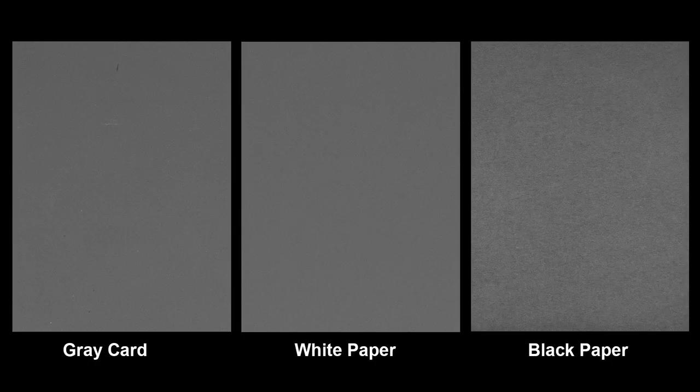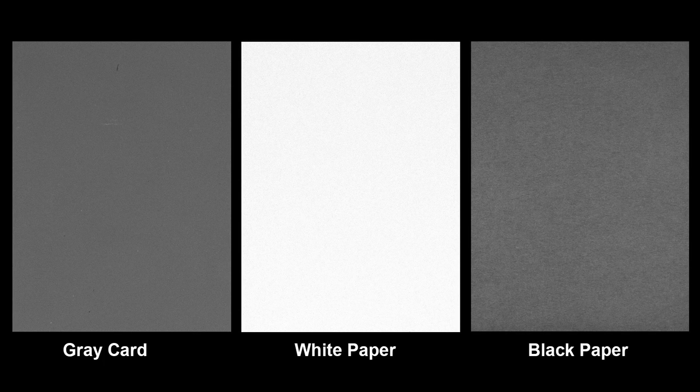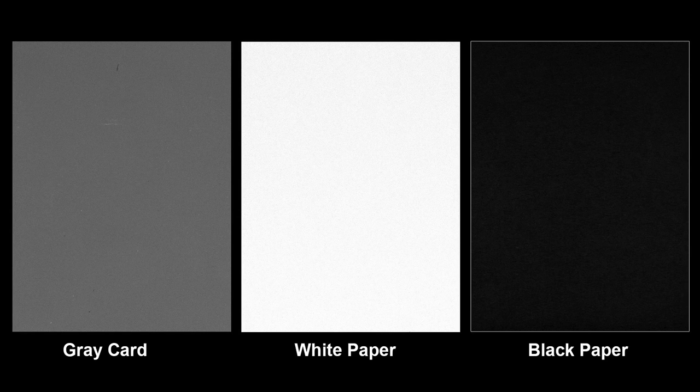So how do we correct for this? Now that you know how the meter thinks, it's actually pretty easy. For scenes dominated by light tonalities, like our white sheet of paper, we know the camera is going to underexpose, so we compensate by adding positive exposure compensation so the whites are rendered lighter than middle tone, as they should be. For scenes dominated by darker tonalities, like our black sheet of paper, we know the camera is going to want to overexpose, so we compensate with negative exposure compensation so those dark tonalities are rendered darker than middle tone, again as they should be.